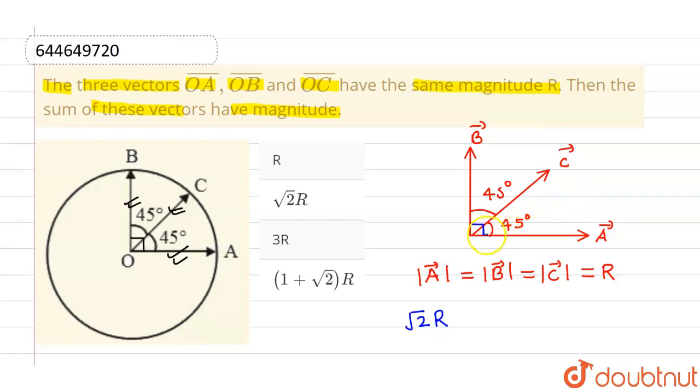So the resultant of OA vector and OB vector will be—let's say this one is the resultant—this will be root 2 R. And since root 2 R and C vector both are in same direction, therefore their magnitudes will be directly added. So the magnitude of resultant is root 2 R plus magnitude of C vector is R.